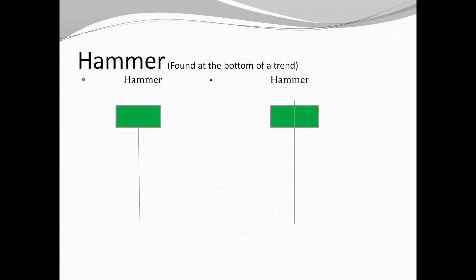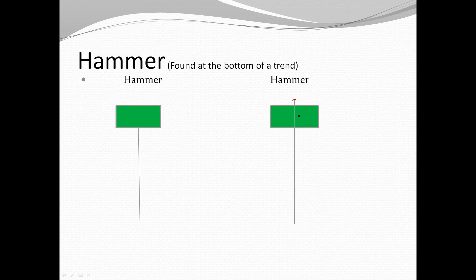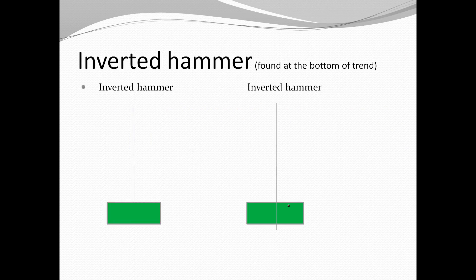A hammer candlestick is found at the bottom of a trend to signal a reversal. It has a long wick with price action closing at the top. Even if the wick protrudes slightly at the top, it can still be considered a hammer. An inverted hammer is also found at the bottom of a trend to signal a reversal — the wick protrudes upward, and it still signals a bullish reversal.